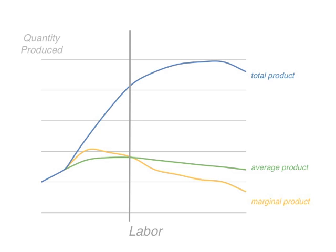That's where each additional worker is adding more than the previous worker. So the slope of that line is the marginal product as well.